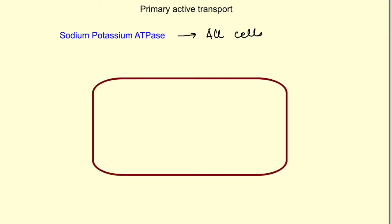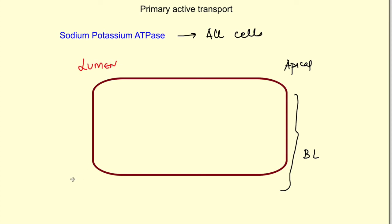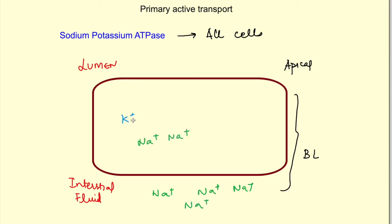This rectangle represents a cell. This is the apical side of the membrane and this is the basolateral side of the membrane. This side will be the lumen and the other side is the interstitial fluid. Remember, sodium is present in higher concentration in extracellular fluid compared to intracellular fluid, while potassium is present in higher concentration in intracellular fluid compared to extracellular fluid.